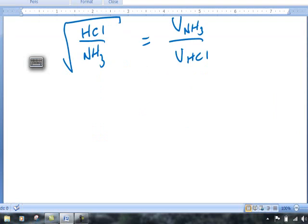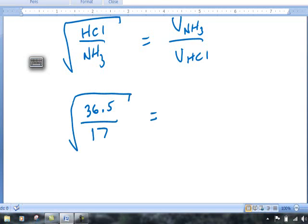We can find the mass of HCl using the periodic table, and it turns out from the periodic table, the mass of HCl is 36.5 grams. The mass of ammonia is 17 grams. If we take the square root of this, this will give us a ratio of the velocity of NH3 to the velocity of HCl. That will be our known value of the ratio of these gases.